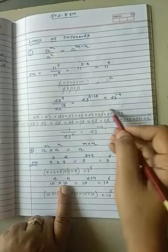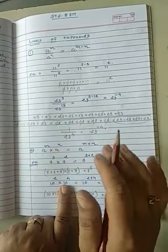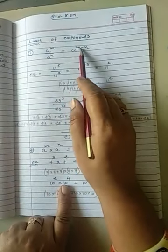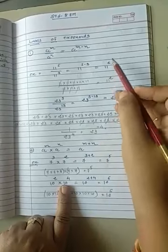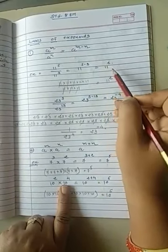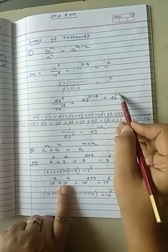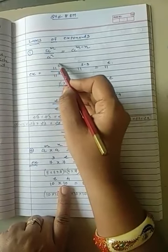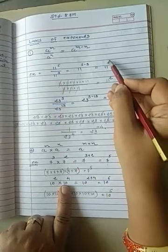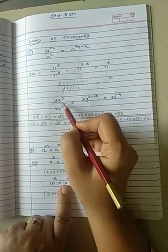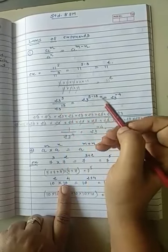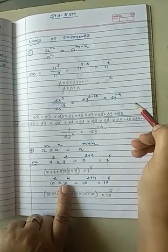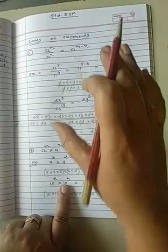You just remember this rule, that whenever you have such a format, subtract the powers. The answer, the power of the answer can be positive or negative. If your numerator's power is bigger, then answer's power will be positive. If your denominator's power is bigger, then the answer's power will be negative. That was the first rule.